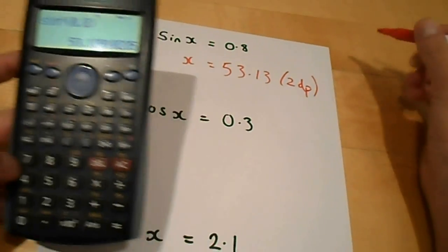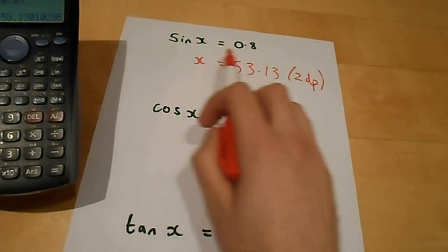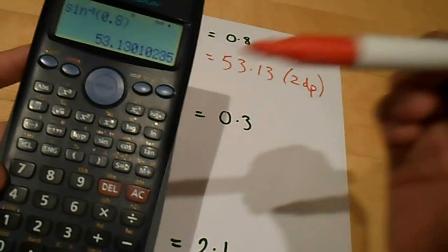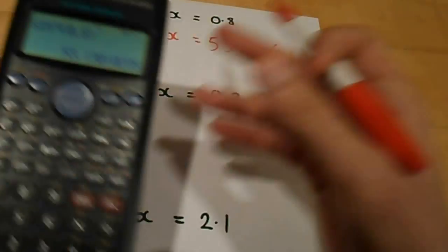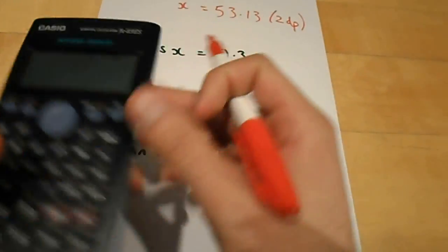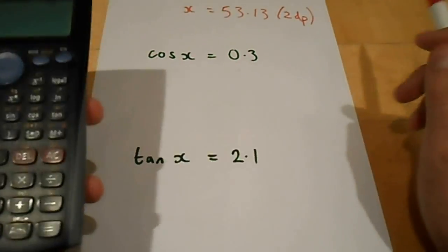So, as I said in this video, I'm not going to be talking about how we get to this point. I'm just going to get you used to using your calculator to find out what x is. So, this is used to find angles. So, my angle x here is 53.13.